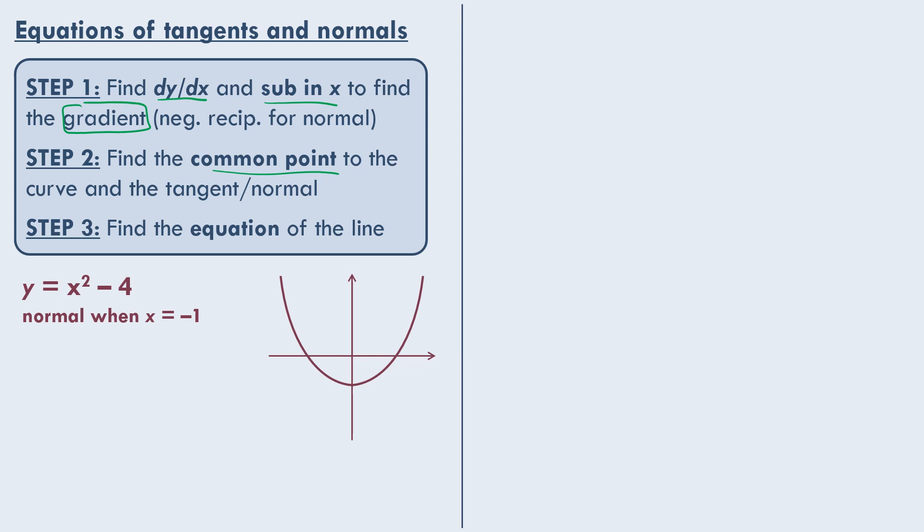Let's say we have y equals x squared minus 4, as I've shown there. We're trying to find the normal when x equals minus 1. So where x equals minus 1 will be around here. And so the normal will look something like this, where it's perpendicular to the tangent, which I'll draw here in orange. So that's the tangent there. Your normal is perpendicular to your tangent.